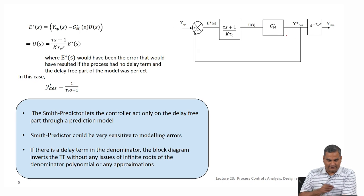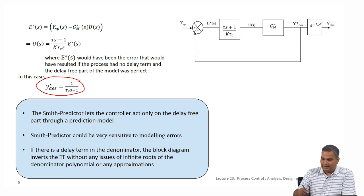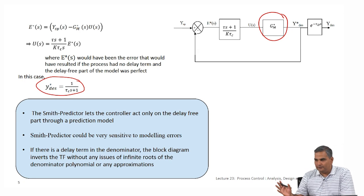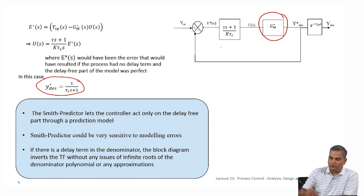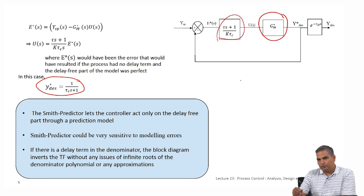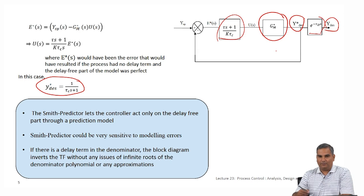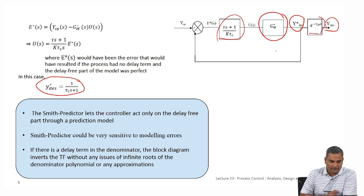This block diagram essentially says: keep your desired output as if there is no time delay and design the PI controller for a delay-free process. The process itself has the delay, so it will take the corresponding time to execute the action — the right turn will happen at the right place. You make the correct decision, wait, and everything works out. That is the core idea of this controller.